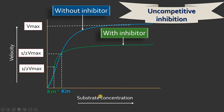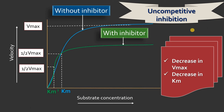However, if you add more substrate concentration, there is still a decrease in Vmax because there is no product formation — the enzyme-substrate complex becomes inactive after binding of the uncompetitive inhibitor. So the end result is both a decrease in Vmax and a decrease in Km in uncompetitive enzyme inhibition.